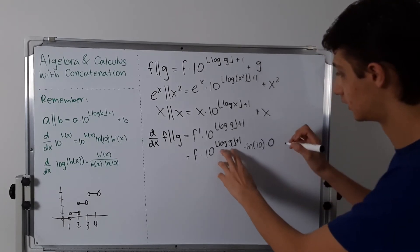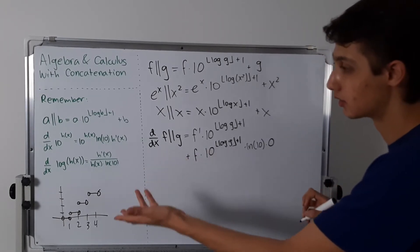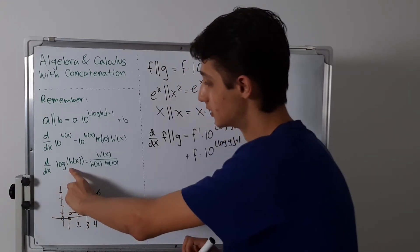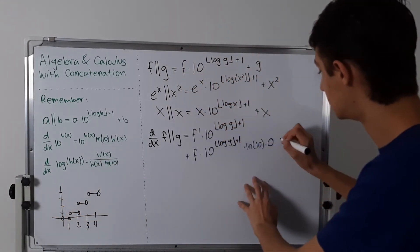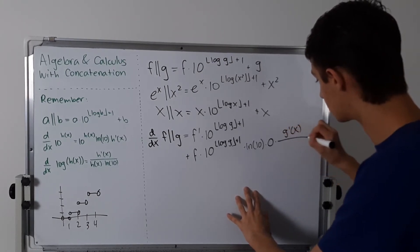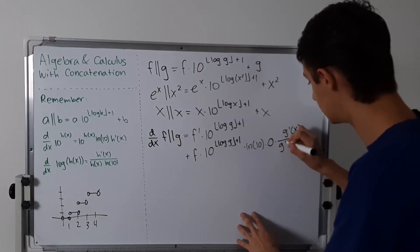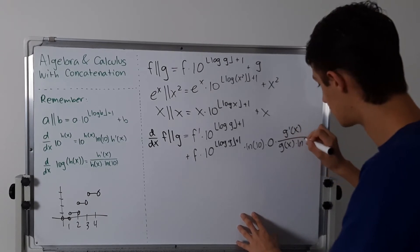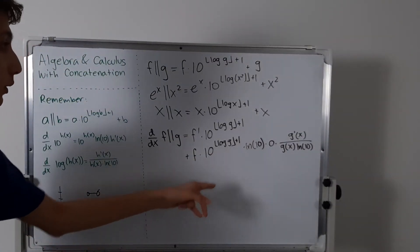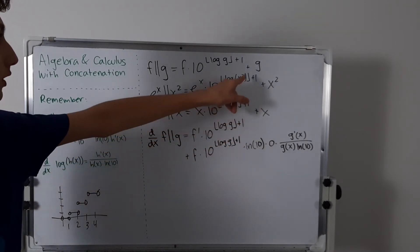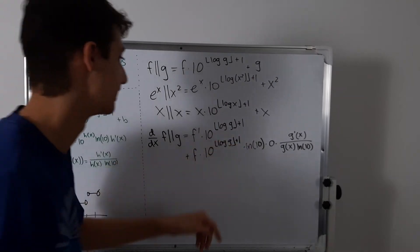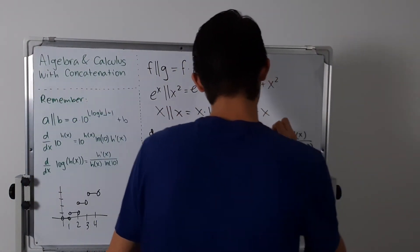So we're going to basically just take the derivative of log of g. The derivative of log of g is g prime of x over g of x times ln 10. And of course, we have plus g prime — taking the derivative of g at the end. So plus g prime.